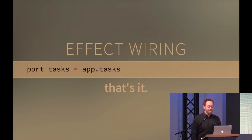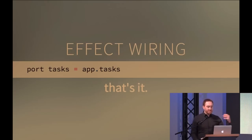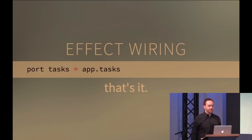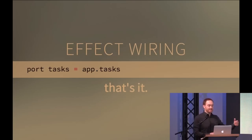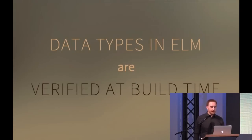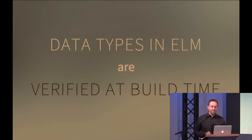Here's all the wiring it takes to make that happen: `port tasks = app.tasks`. That's it. That's how you take all these Tasks — all these values — and turn them into effects. You just hand them off to Elm with this one line of boilerplate: 'here are all my tasks, make them into effects.' The Elm runtime just does it.